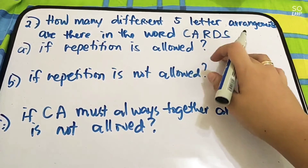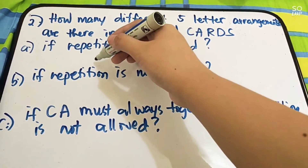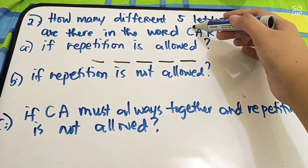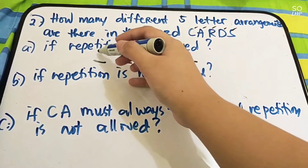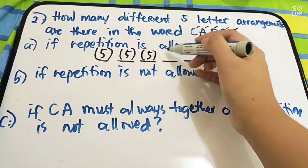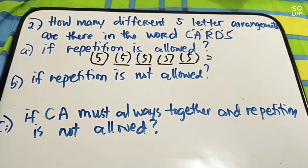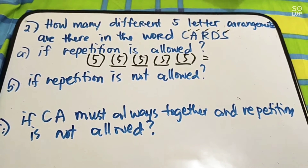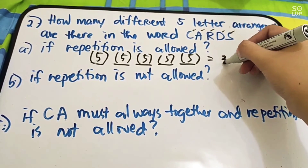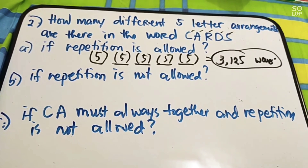Let us have first letter A — repetition is allowed. So, we have C, A, R, D, S. Since magkakaibang object siya and five-letter arrangements, let us have five positions. Repetition is allowed and we have five letters, so for each position pwede sila lahat — we have five. So, we have five times five times five times five times five. The product is 3,125 ways.